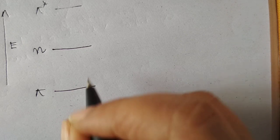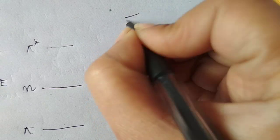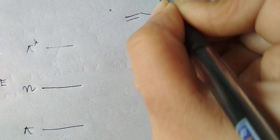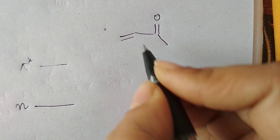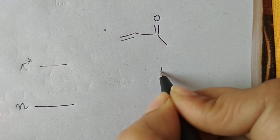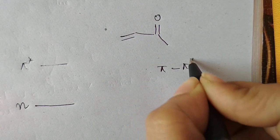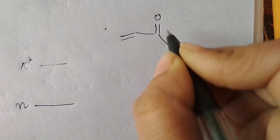Suppose our sample contains this compound, an alpha-beta unsaturated ketone. We have many transitions like pi to pi star transitions and n to pi star transitions.